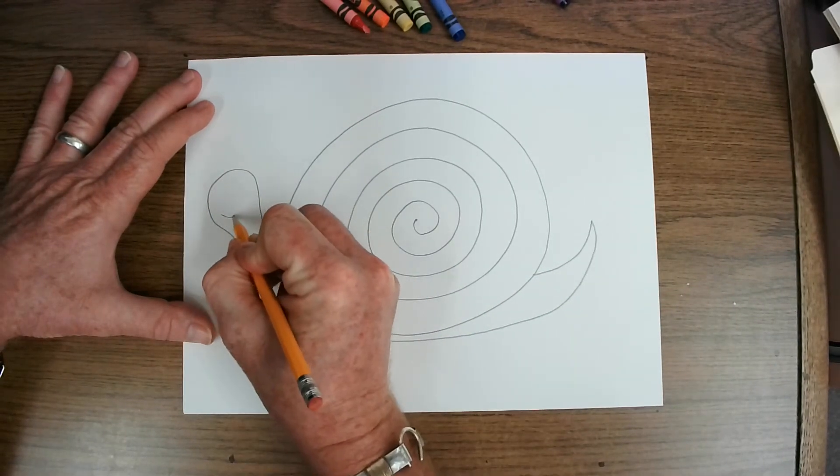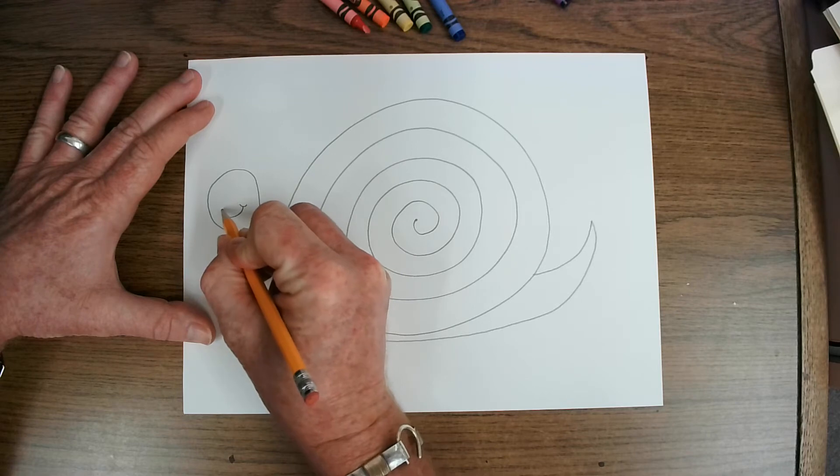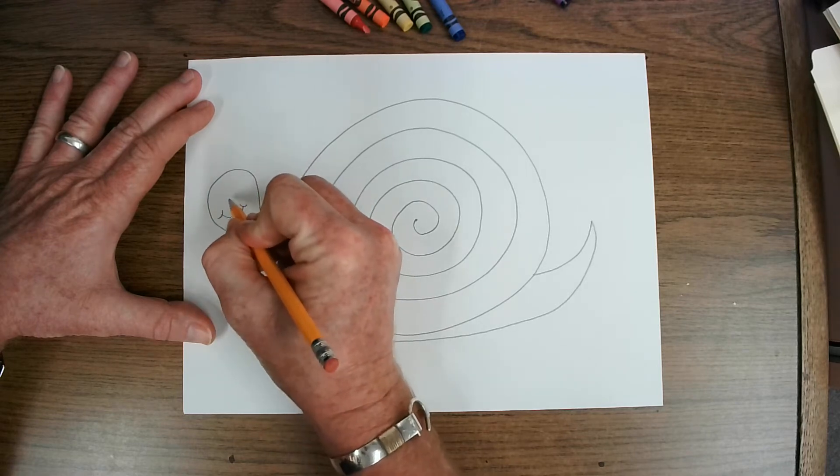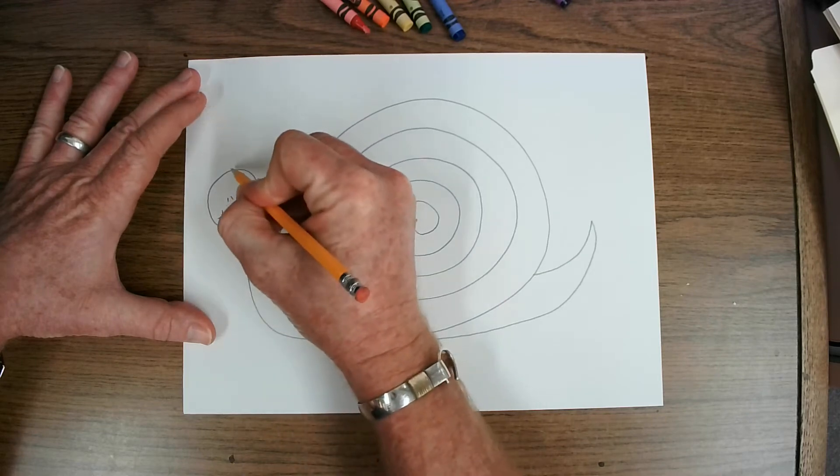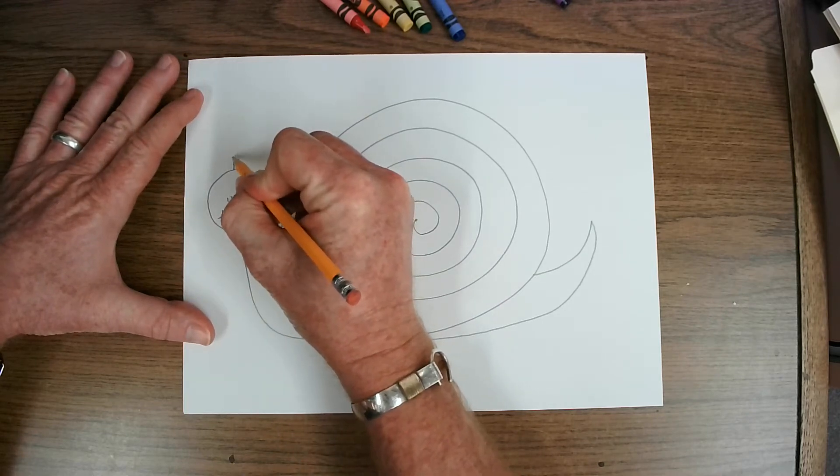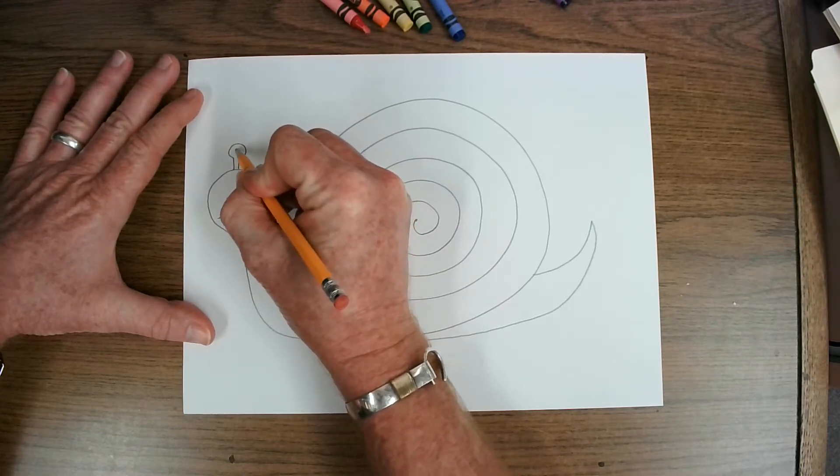If you want you can add some details to your snail. Put a little happy face on there. We can put a nose. And I could draw some eyes right here or I could make some snail eyes up here. I like my eyes up here. I think they're a little bit more fun.